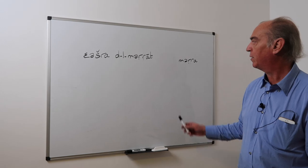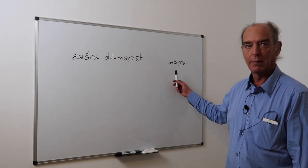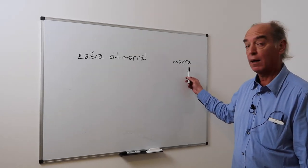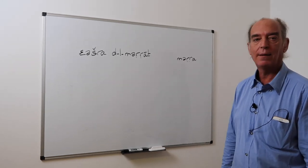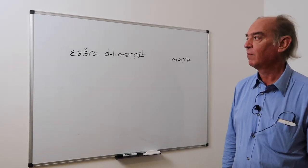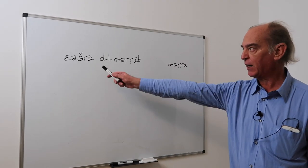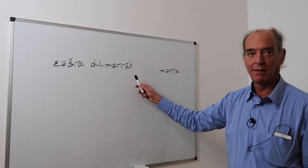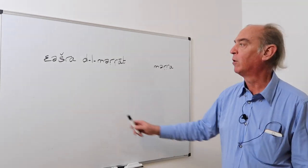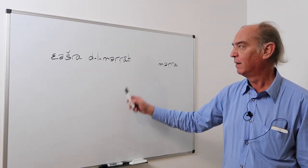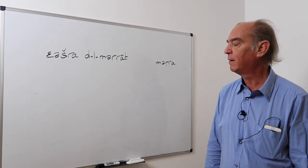We now have a new word. Mrah, with a double R, not mrah. Mrah means one time. Here we have a'ashra d al-mrah. Mrah is the plural of mrah. A'ashra d al-mrah, ten times.